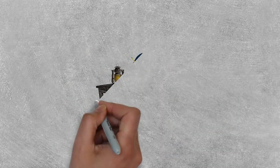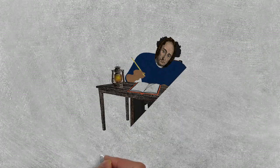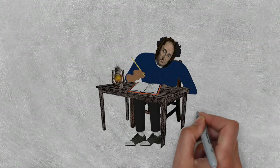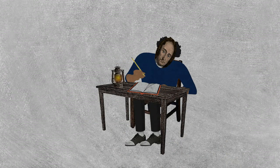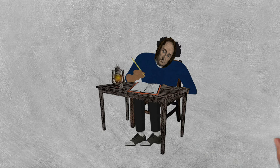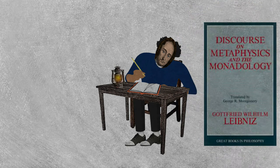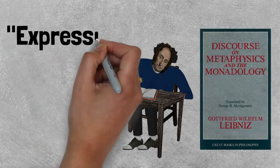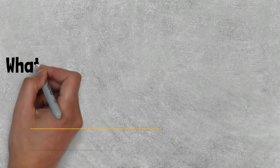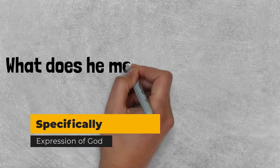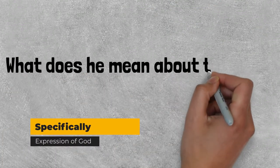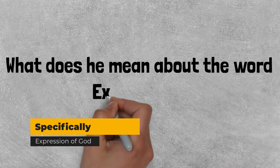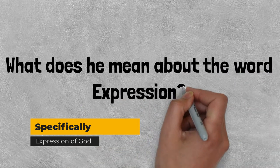The year was 1685. Leibniz was almost done writing his book. And just like all of his books, it constantly uses the notion of expression. The mystery remains: what does he exactly mean about the word expression? Well, let's find out.